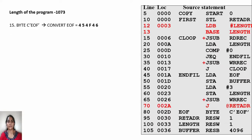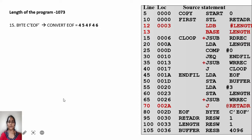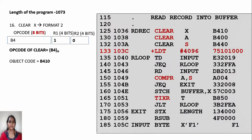Continuing with the hand assembly of SIC, the statement BYTE C 'EOF' is assembled as the ASCII value of E, which is 45, O is 4F, and F is 46. So it is converted to 45 4F 46.